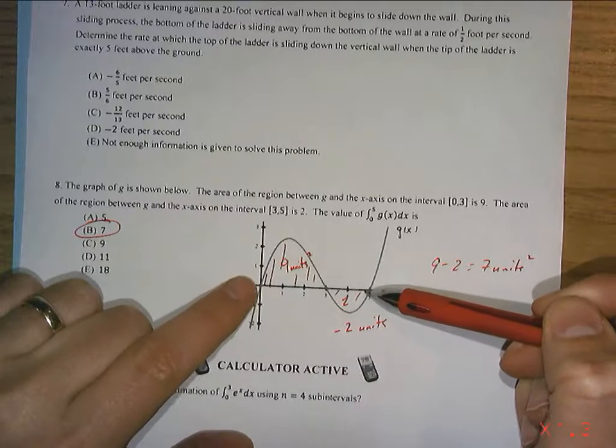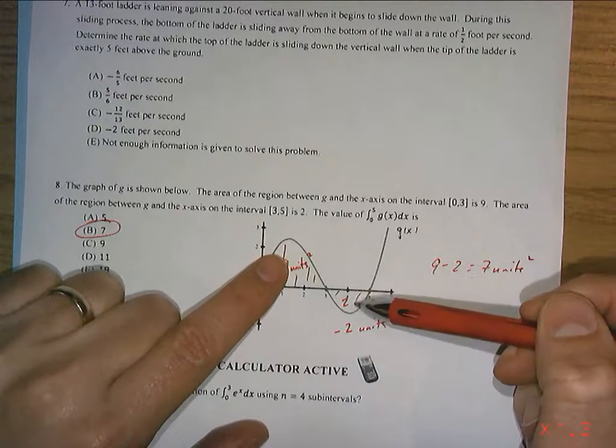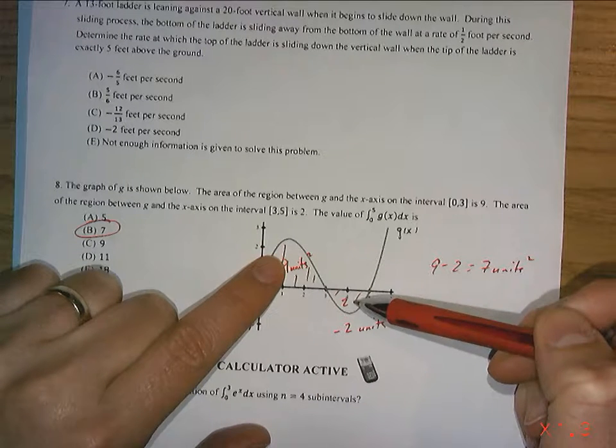when you add them, it's not accumulation of this area plus this area per se. You're going to get this area plus this negative area.